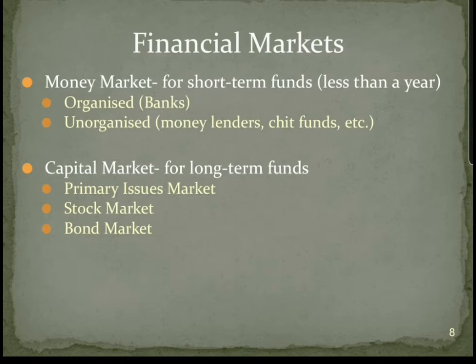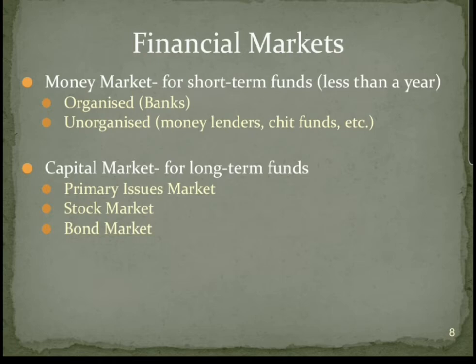The capital market is meant to issue or get long-term funds from the market. The primary issue market is where the company issues shares to the general public. The stock market is also known as a secondary market, where the investor purchases from another investor — like selling second-hand goods, with no role of the company. If I have invested money in company A, company A will not be affected if I sell my shares to investor B.